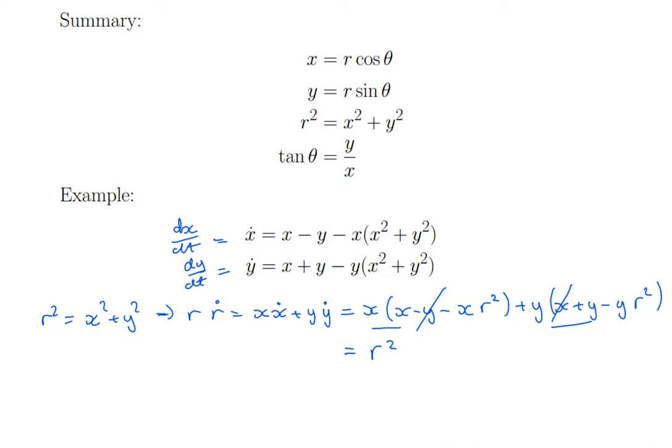Minus, the other terms have a common factor, r squared, and it's x squared plus y squared again. So it's minus r to the fourth. Divide both sides by r. r dot is r minus r cubed, which is r(1 minus r squared). And remember, r is the radius. So r has to be greater than or equal to zero.